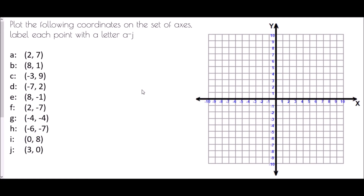We're going to start with the question: plot the following coordinates on the set of axes and label each point with a letter A to J. A set of axes has an x-axis and a y-axis — x values go left to right, y values go up and down. Right in the center is zero, known as the origin of the graph, where everything begins. All counting starts from this point: zero zero.